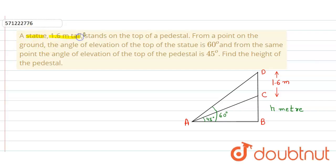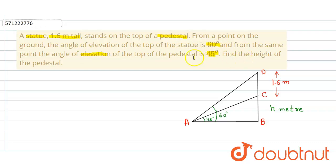In the given question, a statue 1.6 meters tall stands on the top of a pedestal. From a point on the ground, the angle of elevation of the top of the statue is 60 degrees, and from the same point the angle of elevation of the top of the pedestal is 45 degrees. We have to find the height of the pedestal.